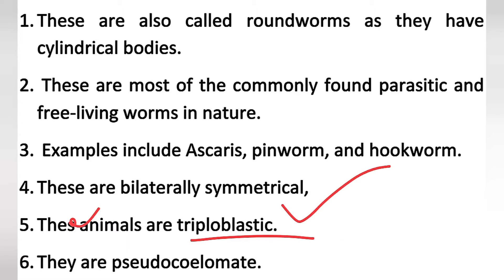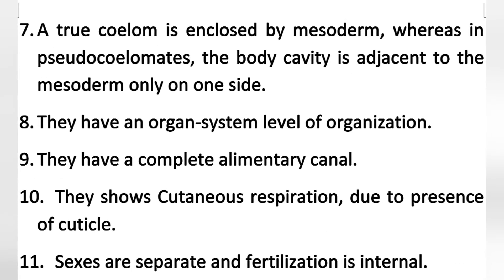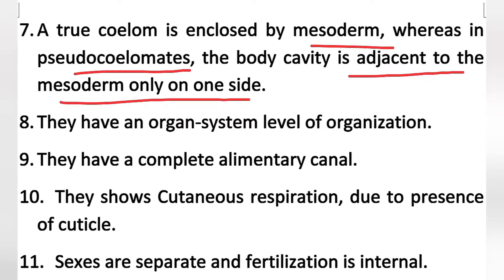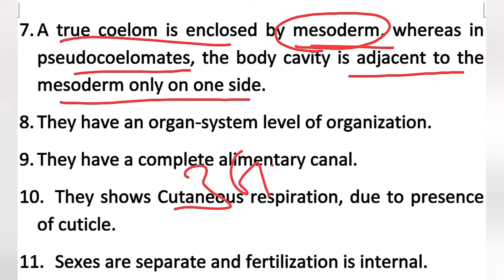Triploblastic means having three germ layers. Next point: they are pseudocoelomates. Pseudo means false, so pseudocoelomate means a false body cavity. A true coelom is enclosed by mesoderm, whereas in pseudocoelomates the body cavity is adjacent to the mesoderm on one side only. Triploblastic means three germ layers.